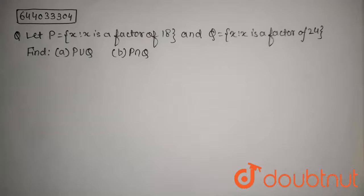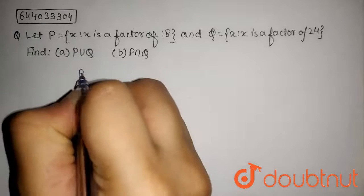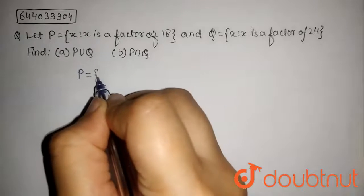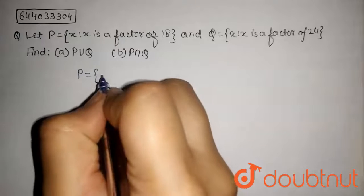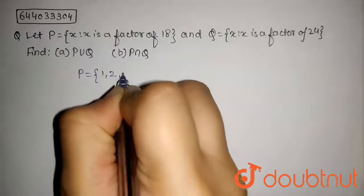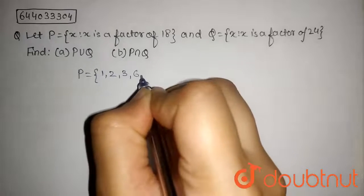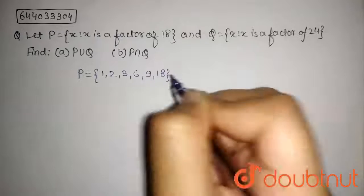So in this question, we have given P and Q in set builder form. So first we will convert P and Q in roster form. So P set will contain all the elements which are factor of 18. So the factors of 18 are 1, 2, 3, 6, 9 and 18.